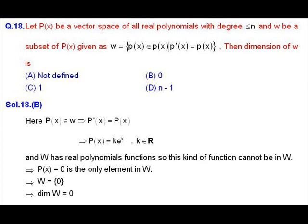Solution of question number 18: let P(x) be the vector space of all real polynomials with degree less than or equal to n, and W be a subset of P(x) as defined in the question. We can check that W is a subspace of P(x), so we can define the dimension of W. To find the dimension, we first find the exact structure of elements of W.